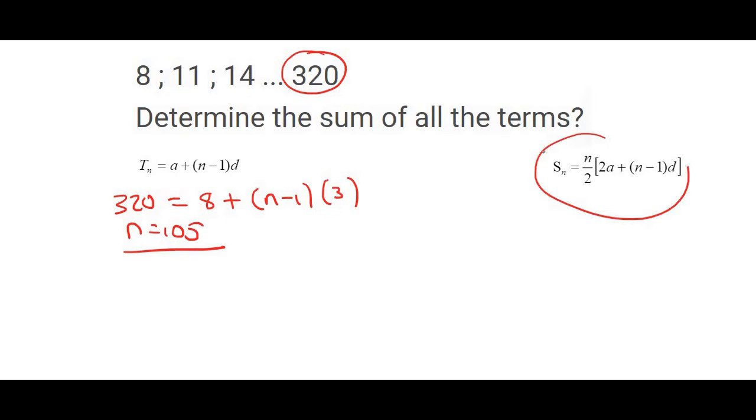Now we can use the sum formula. SN equals 105 over 2, times 2 times A, which is 8, plus 105 minus 1, times the common difference of 3.